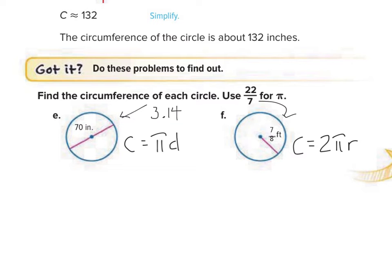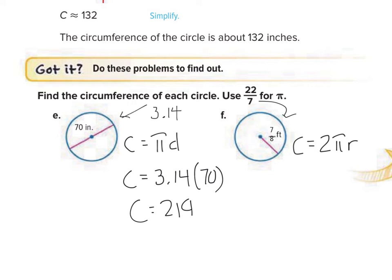Problem E: replacing pi with 3.14 and the diameter with 70, multiply 3.14 times 70. That gives us the circumference. 3.14 times 70 is 219.8 inches. So the circumference is 219.8 inches — that's the distance around the outside of the circle.